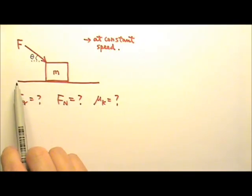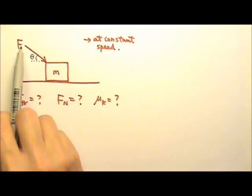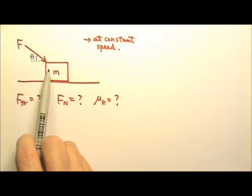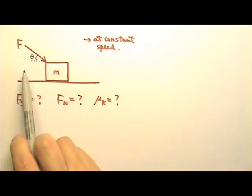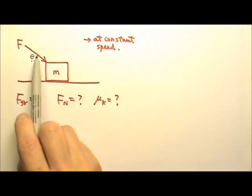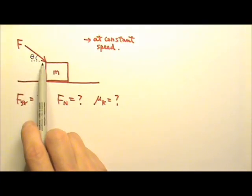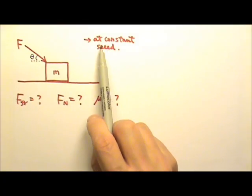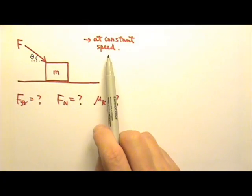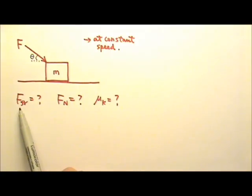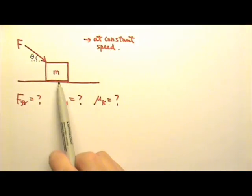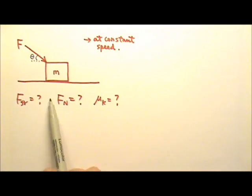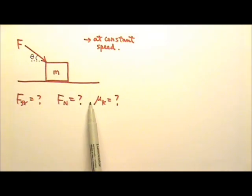In this next problem, we have a box on a table, and there's a slanted force F pushing on the box. The force is slanted at an angle theta to the horizontal. The box gets pushed at a constant speed to the right. We're looking for the friction between the box and the table, the normal force between the box and the table, and the mu k between the box and the table.